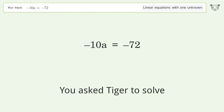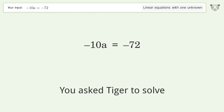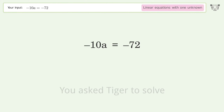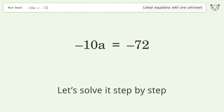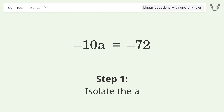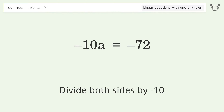You asked Tiger to solve this — it deals with linear equations with one unknown. The final result is a equals 36 over 5. Let's solve it step by step: isolate the a, divide both sides by negative 10.